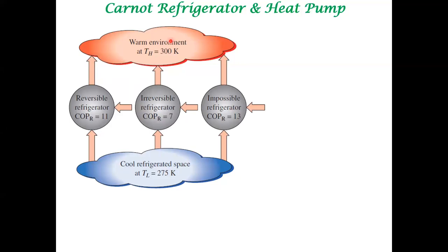Depending upon the objective, we can define the coefficient of performance. We don't use the term efficiency because the coefficient of performance can be greater than one. The coefficient of performance of a refrigerator is focused on how much heat is removed from the low temperature reservoir, so the focus is on QL. For a heat pump, the focus is on QH — the heat supplied to a particular place. The formula is slightly different, but the working principle is the same.